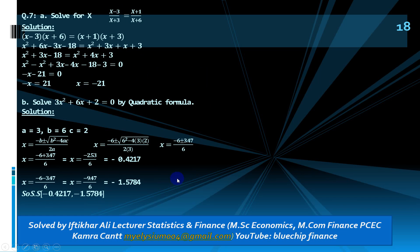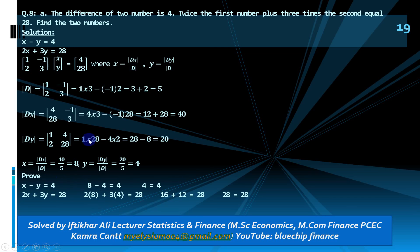For part (b), a = 3, b = 6, c = 2. Apply these values into the quadratic formula to get the values of x.